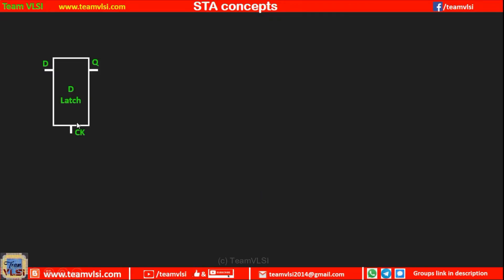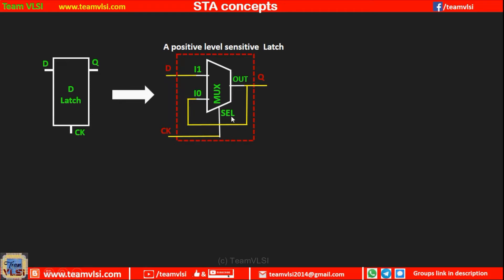Consider a D-latch. Here I am considering a positive level sensitive D-latch, but the similar concept will be applicable for the negative level sensitive latch also. A D-latch can be realized using a 2-to-1 MUX where one output is fed back to one input, so that when your selection line is high, D will be transferred to Q, and when it is low it will be in a feedback loop.